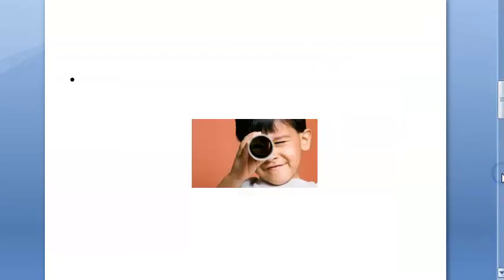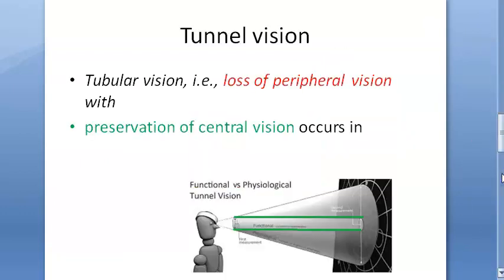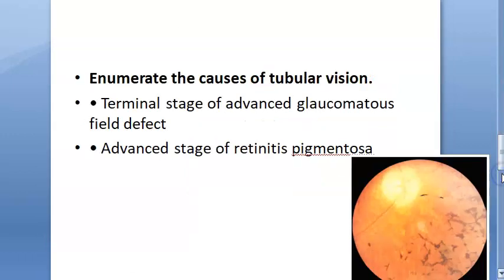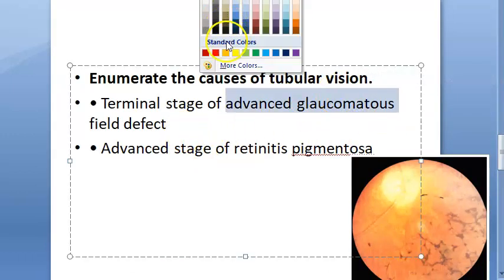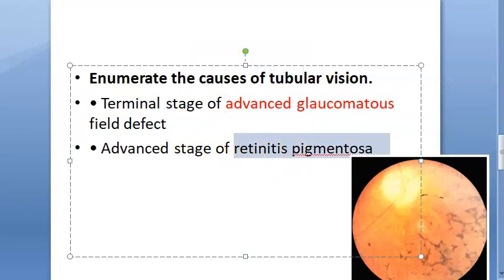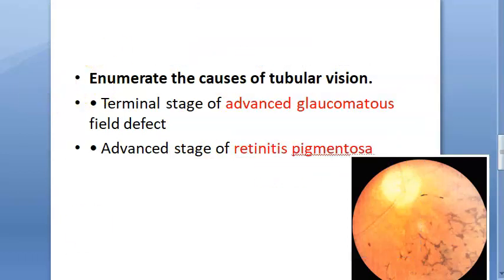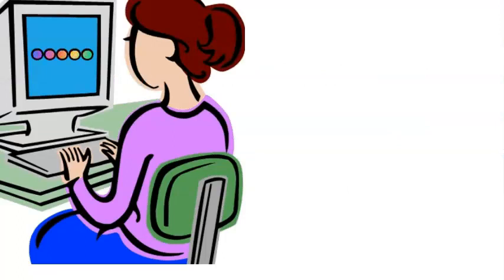To summarize: tubular vision is a small island of central vision, representing the loss of peripheral vision. It occurs in only two conditions — advanced glaucoma and retinitis pigmentosa. That's all for this video.